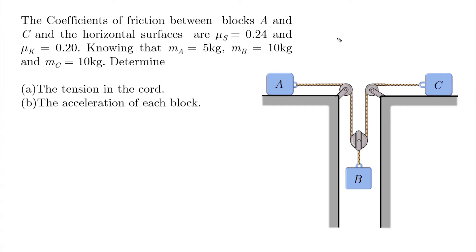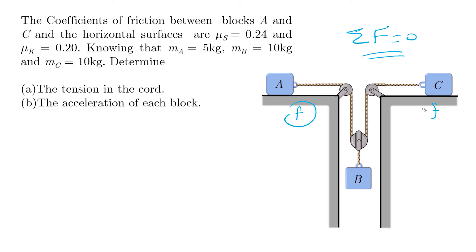To do that, we assume first that the system is static, which means the summation of forces over the entire system is equal to zero, and then solve for the friction forces under A and C. After finding those friction forces, we check whether they are less than or more than the maximum static friction.